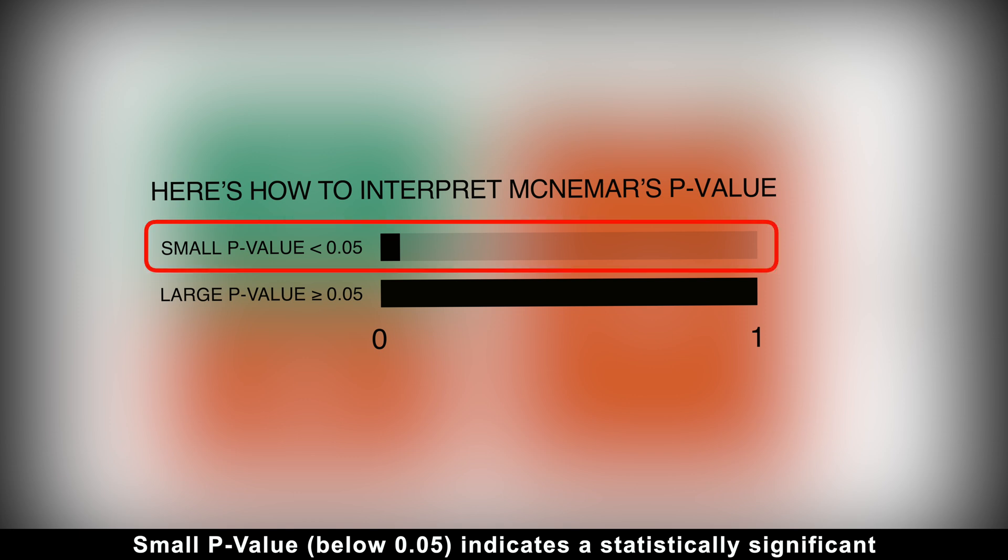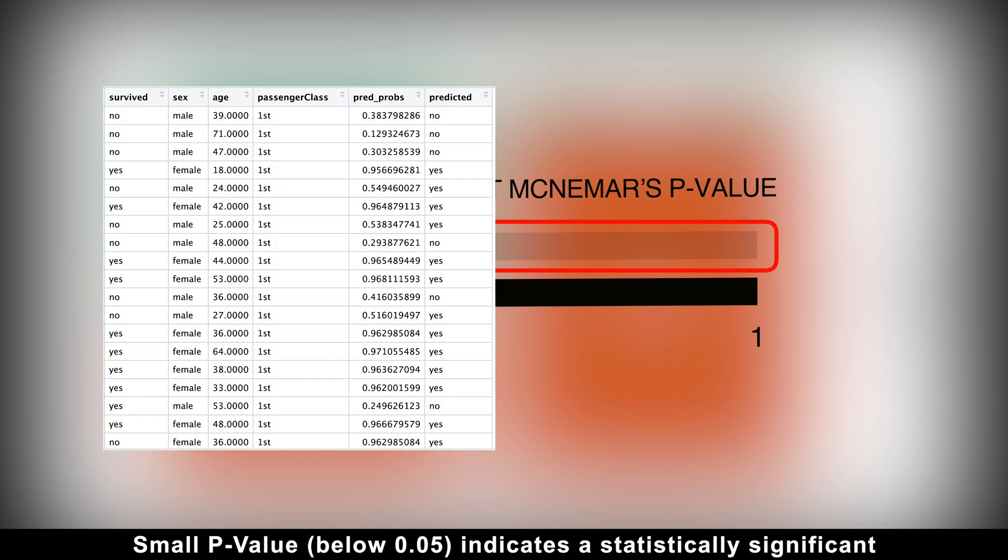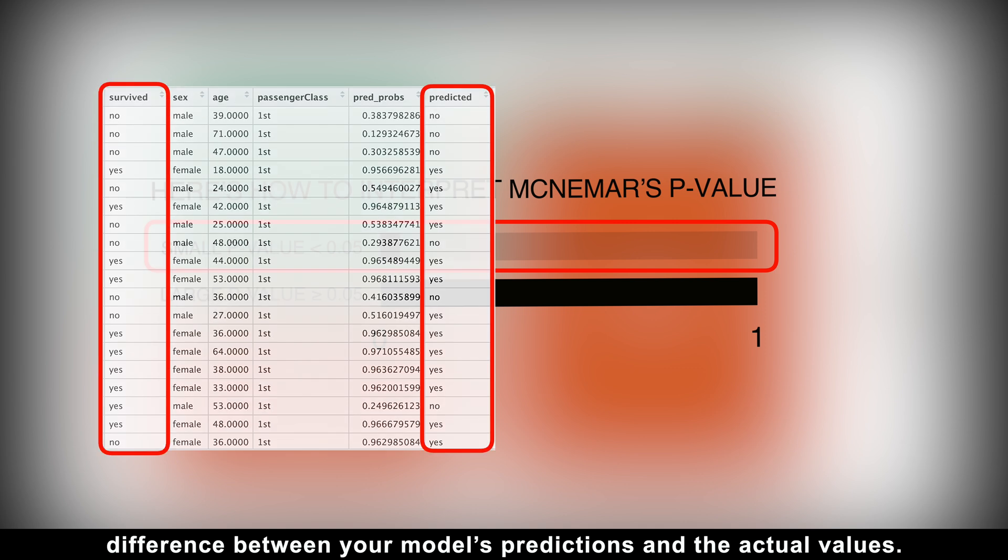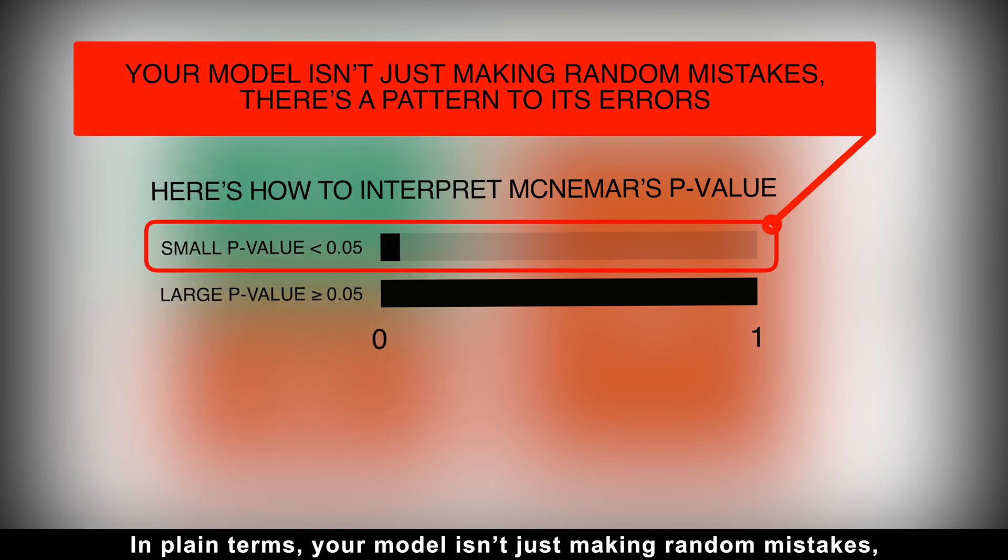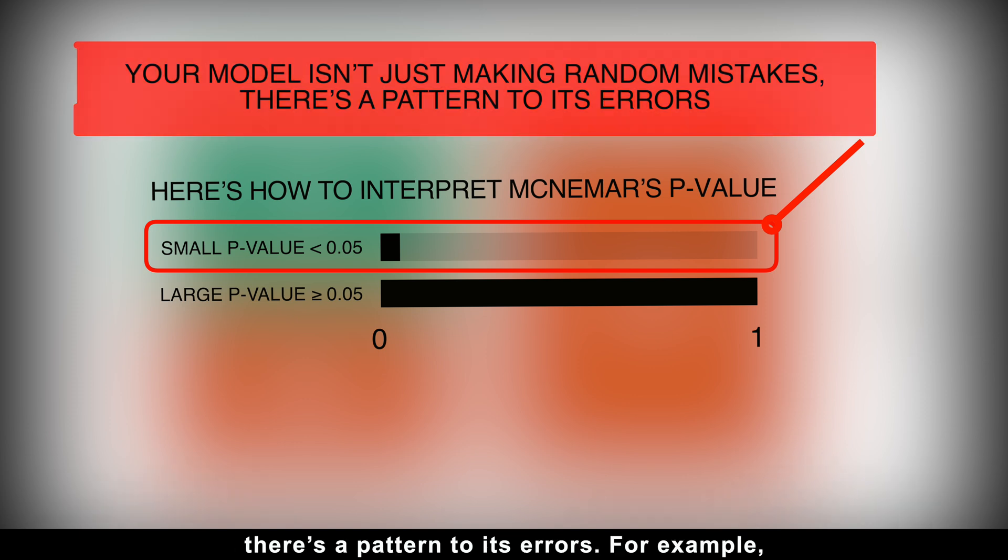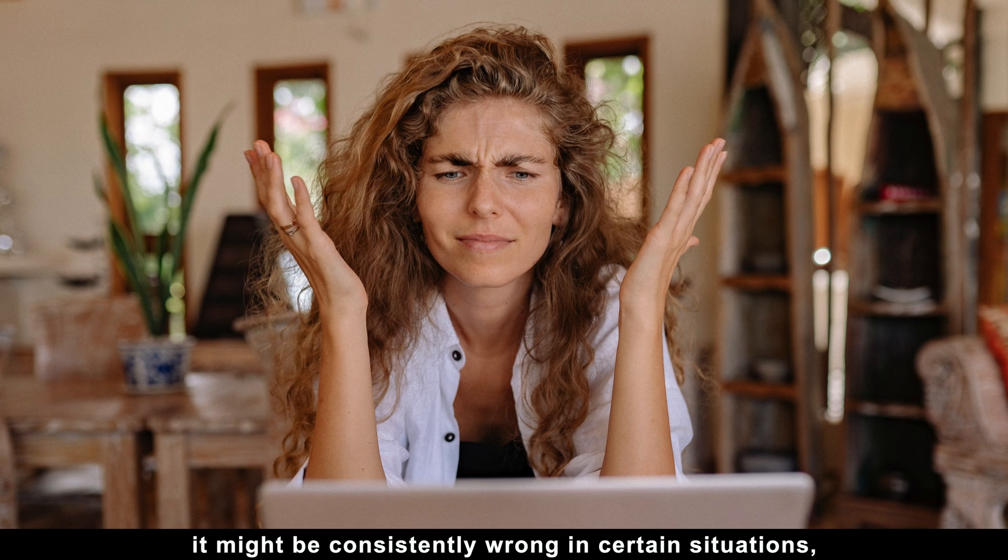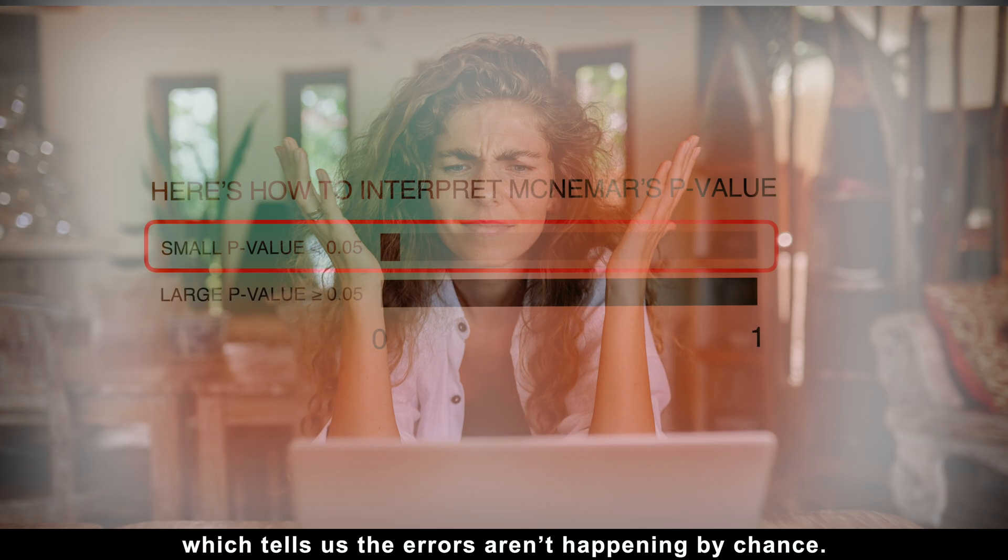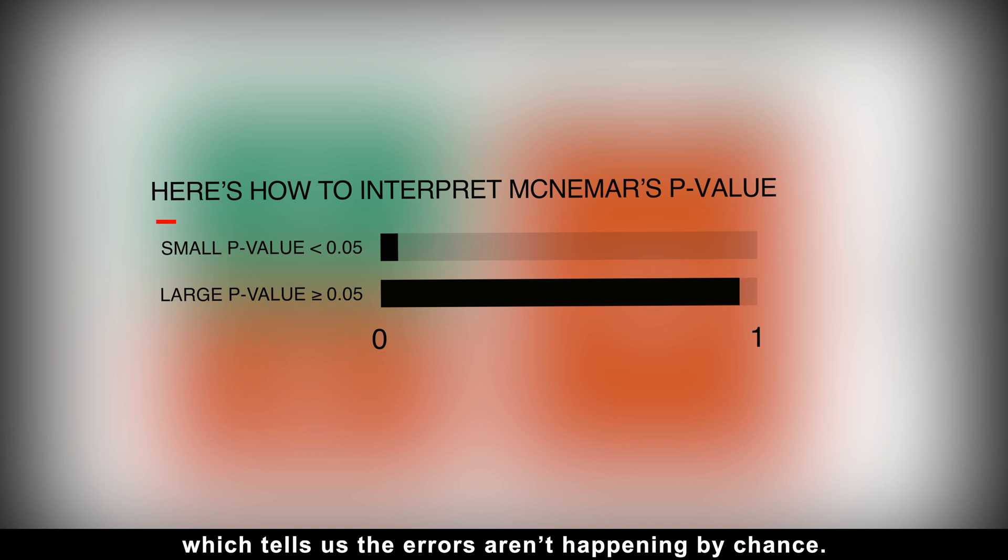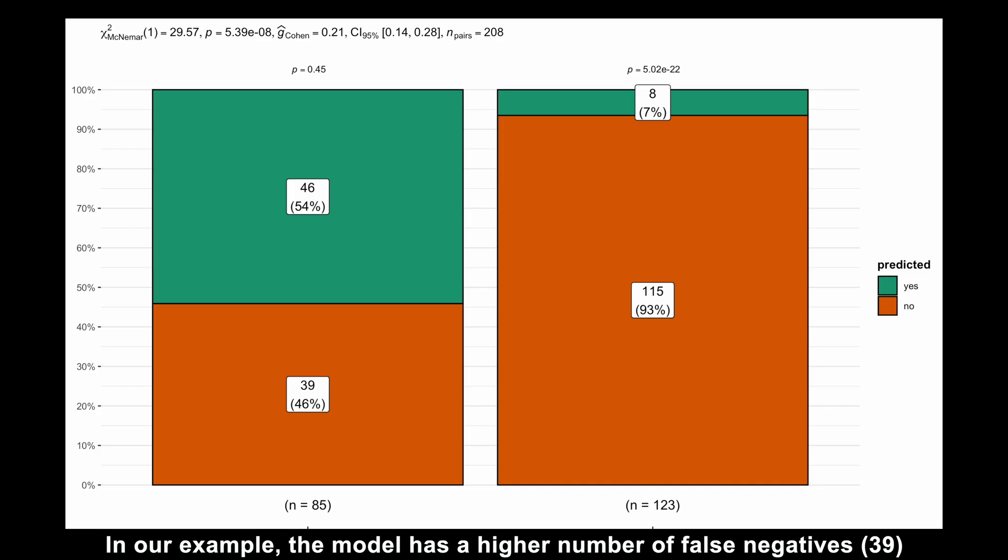Here is how to interpret McNemar's p-value. Small p-value below 0.05 indicates a statistically significant difference between your model's predictions and the actual values. In plain terms, your model isn't just making random mistakes, there is a pattern to its errors. For example, it might be consistently wrong in certain situations, which tells us the errors aren't happening by chance.